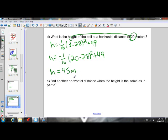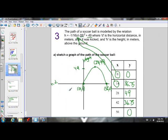Part E, find another horizontal distance when the height is the same as in part D. So in part D, we figured out that at a horizontal distance of 20, somewhere around here, the height is 45.